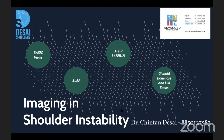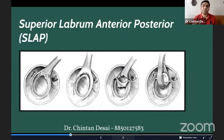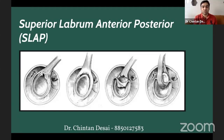SLAP stands for Superior Labrum tear in the Anterior and Posterior dimension — it is where the biceps anchor attaches to the labrum or glenoid. SLAP tears can be categorized into two main classifications. The first classifies four tear types: Type 1 is degeneration or mucoid degeneration with some fraying seen on MRI — a fraying of the superior labrum.